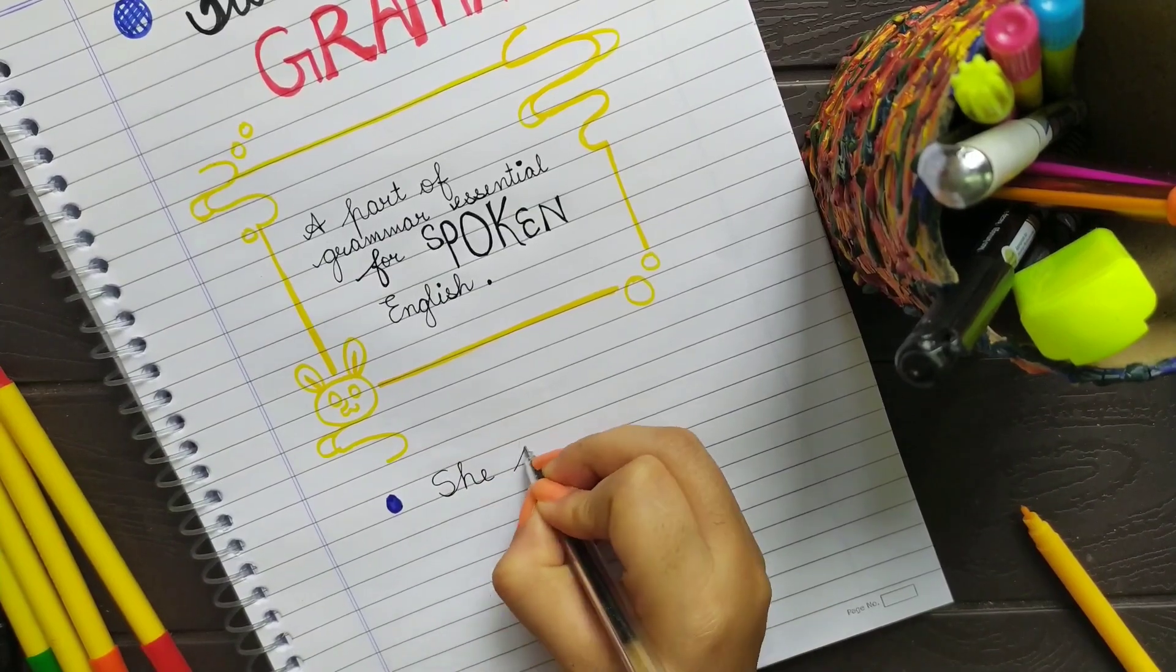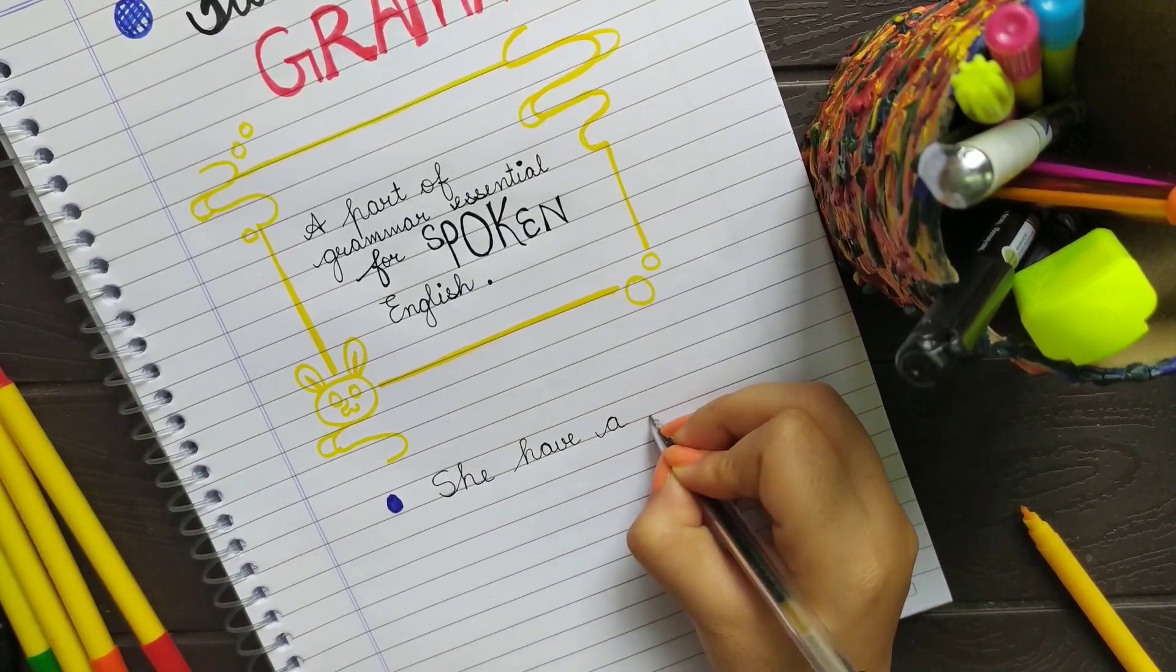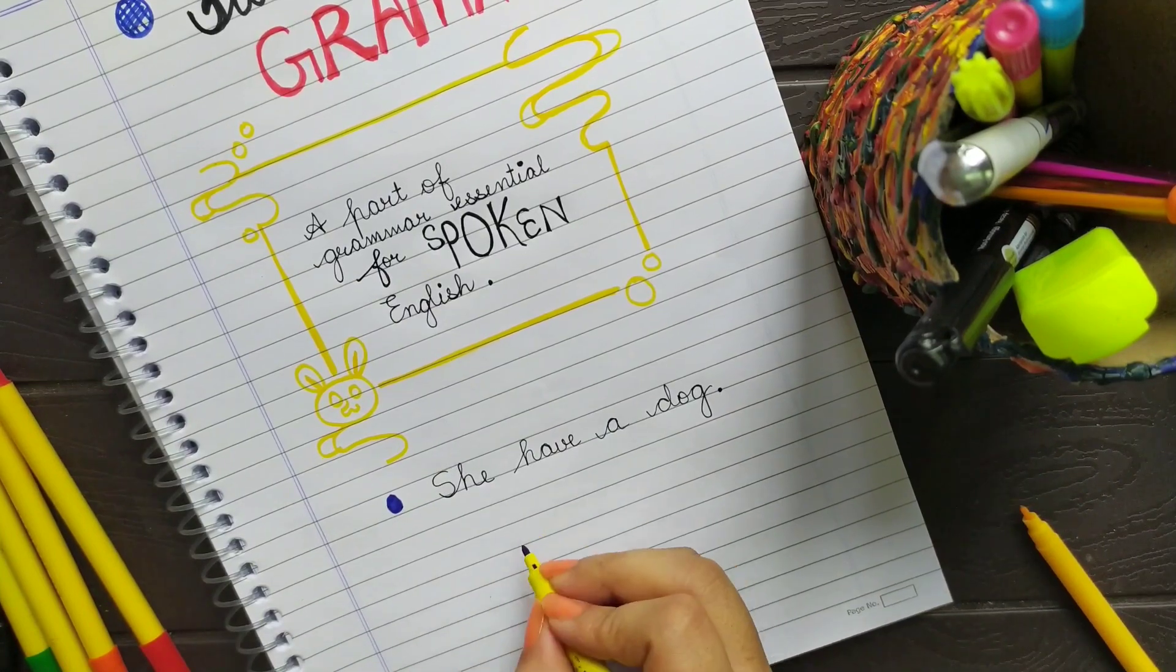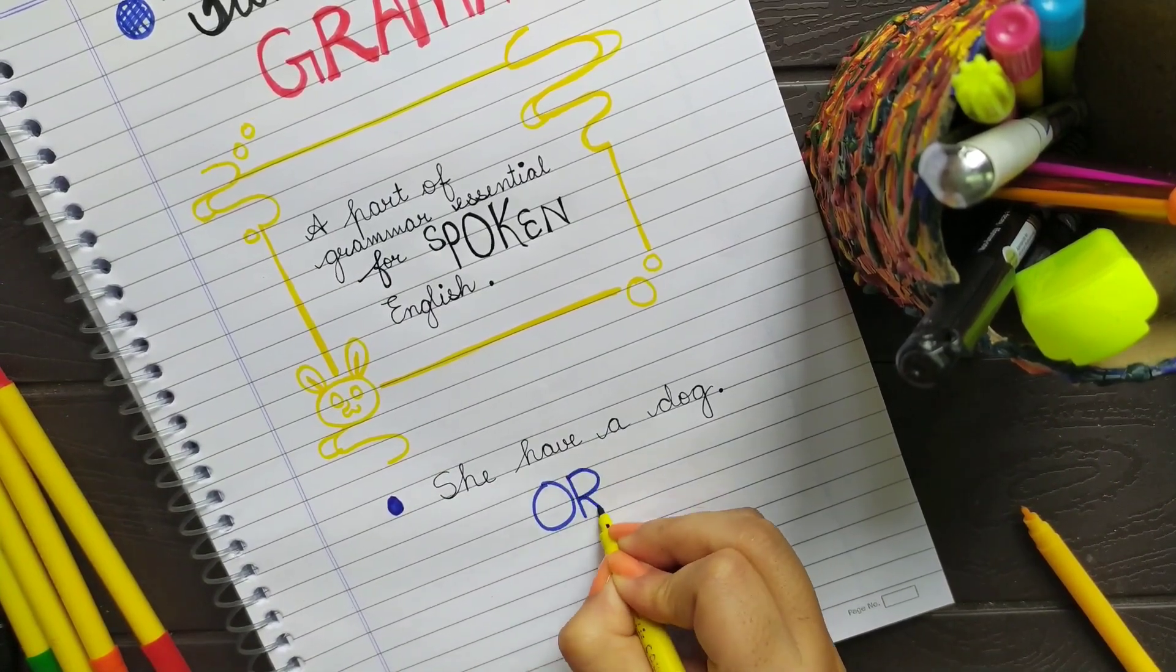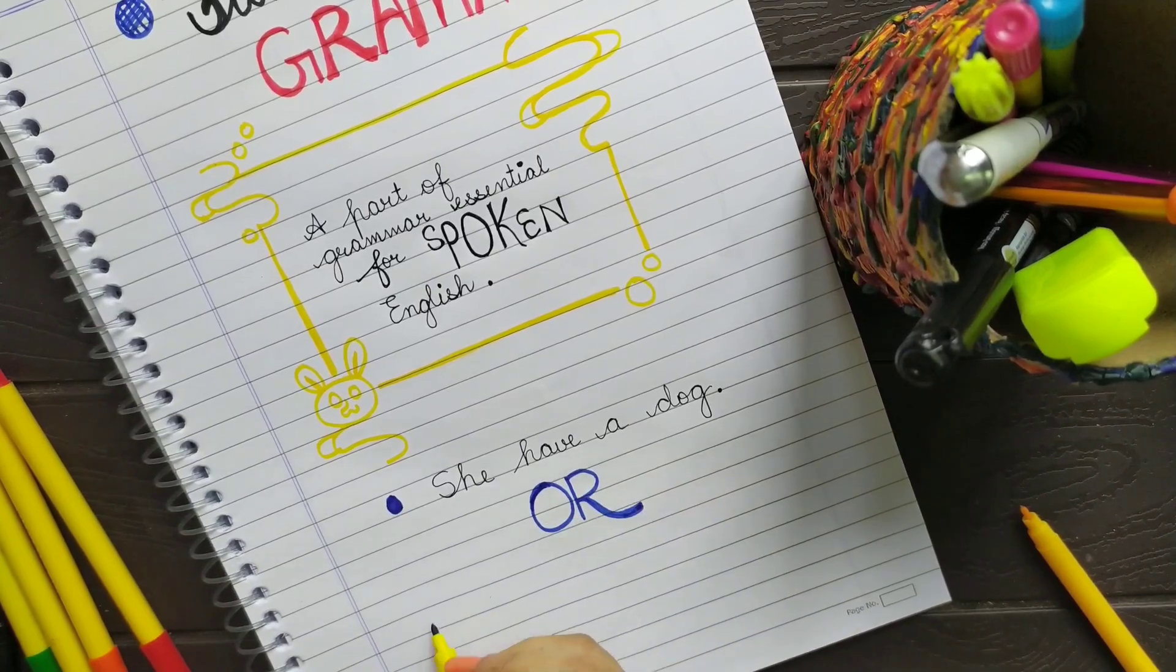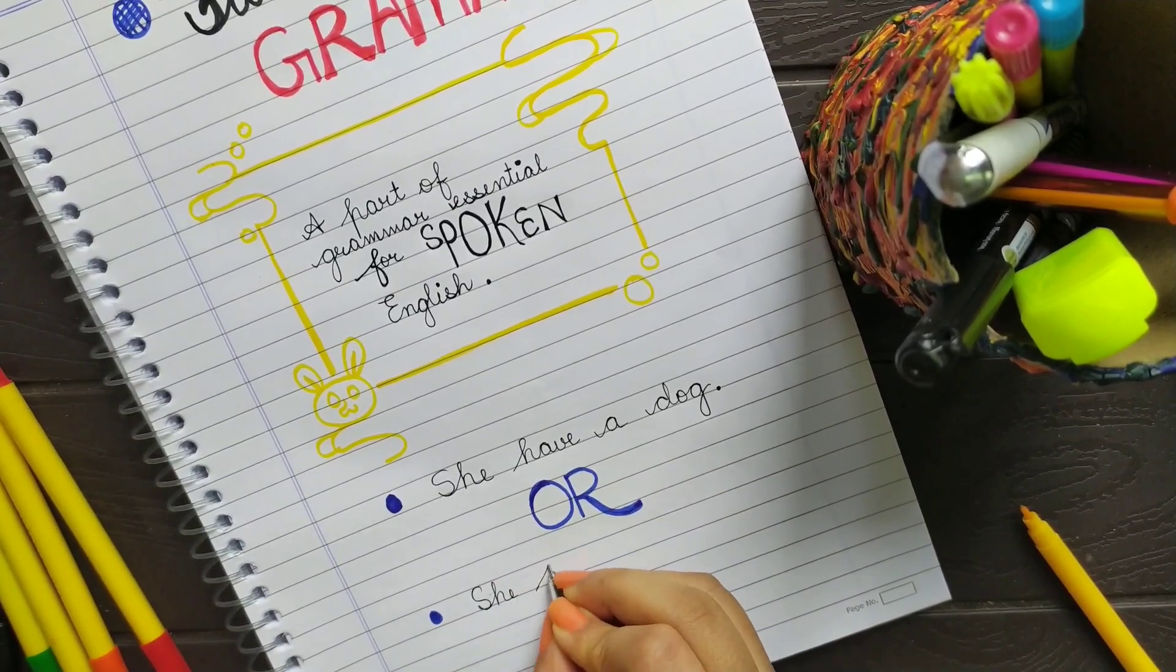Here, the first sentence is 'she have a dog' and the second is 'she has a dog.' Now in both of these sentences, which one is correct? One who has mastered functional grammar will definitely come out with correct sentence structure, and that is 'she has a dog.'